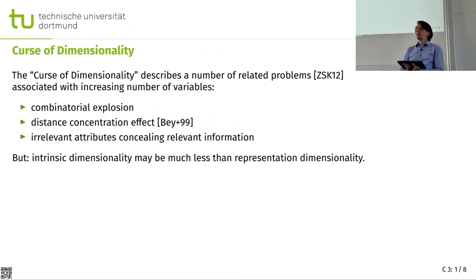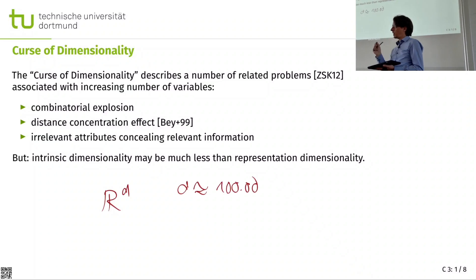But there's also been the observation that we should step out of the thinking of our traditional mathematical vector spaces. Just because we have a vector space that is R to the power of d and d may be 100,000 does not mean that our data behaves like data sampled from a 100,000 dimensional data distribution. Because in text data, for example, our data is sparse. So a lot of these values will be zero.